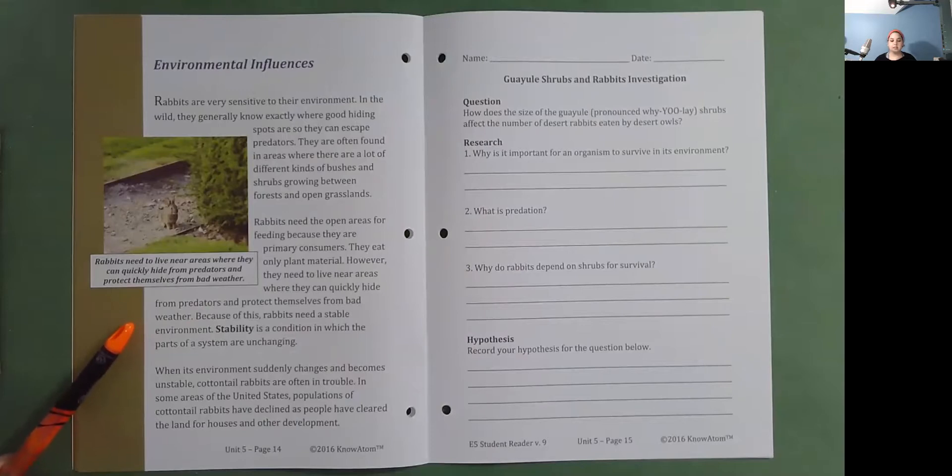Because of this, rabbits need a stable environment. Stability is a condition in which the parts of a system are unchanging. When its environment suddenly changes and becomes unstable, cottontail rabbits are often in trouble. In some areas of the United States, populations of cottontail rabbits have declined as people have cleared the land for houses and other development. Rabbits need to live near areas where they can quickly hide from predators and protect themselves from bad weather.